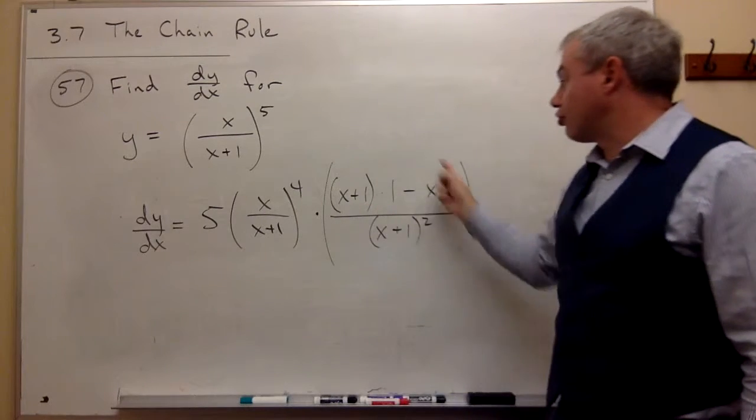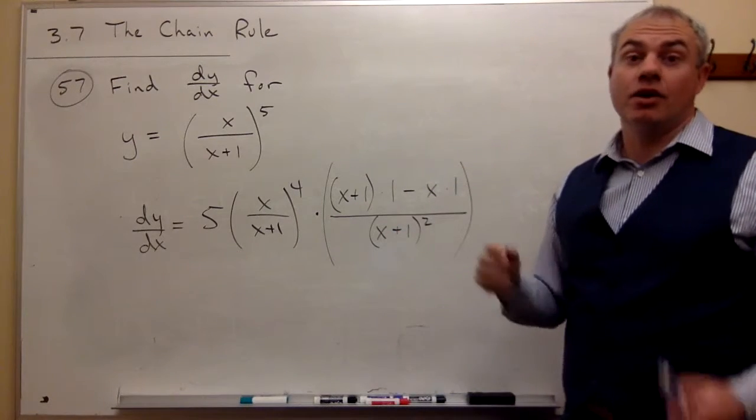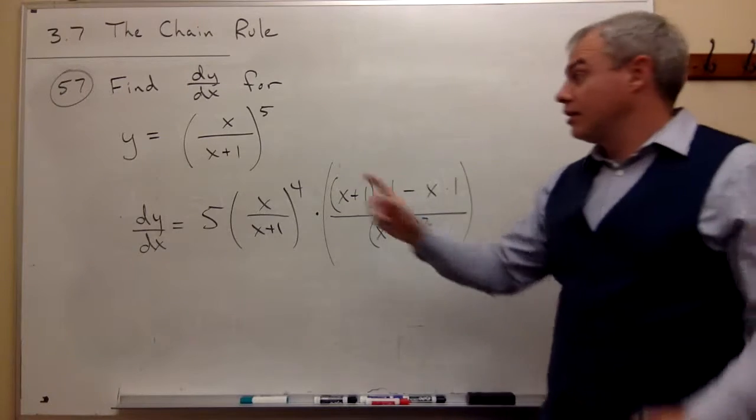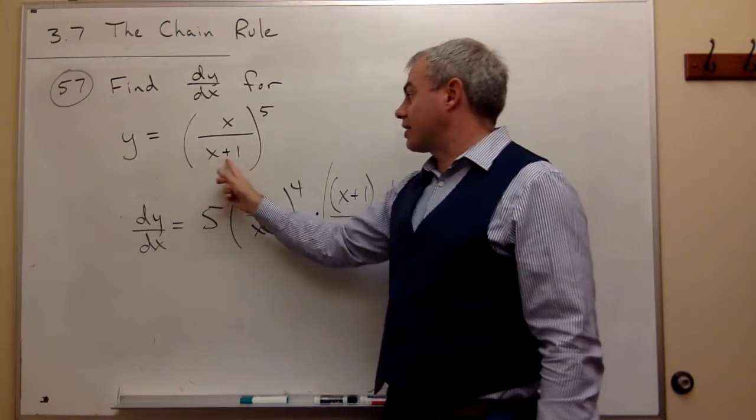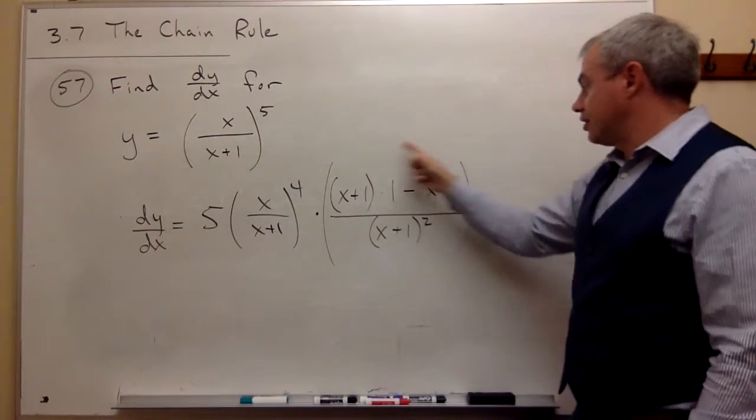Then I need to multiply by the derivative of what's on the inside, or the derivative of the something, which in this case is x over x plus 1, and here's the derivative.